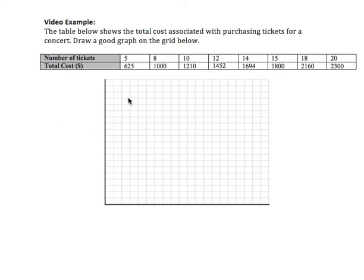Here I'm given data about the total cost associated with purchasing tickets for a concert and I'm asked to draw a good graph on the grid below. So let's start by understanding our input or horizontal axis and our output or vertical axis.